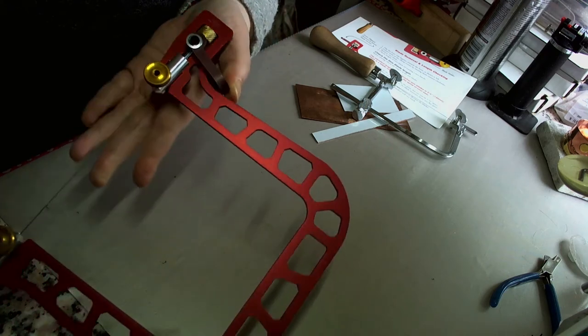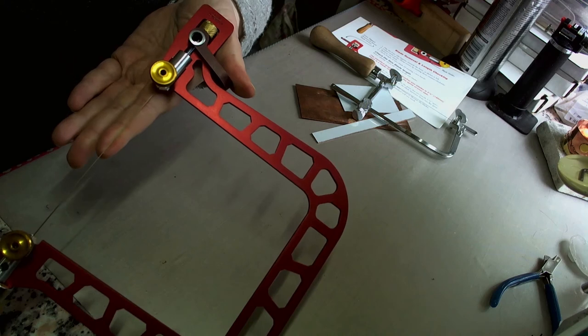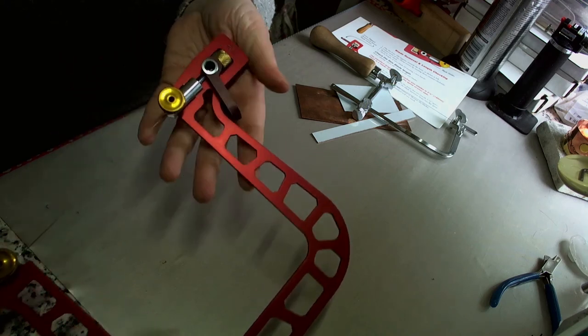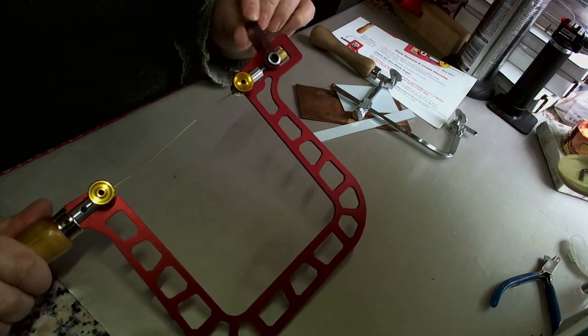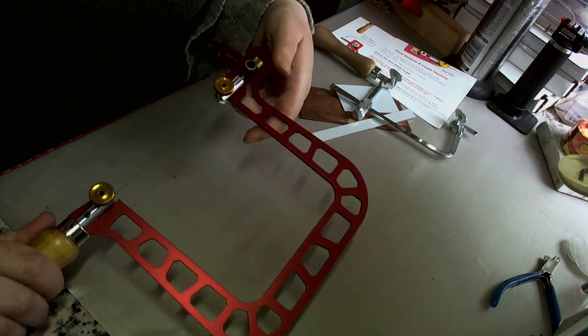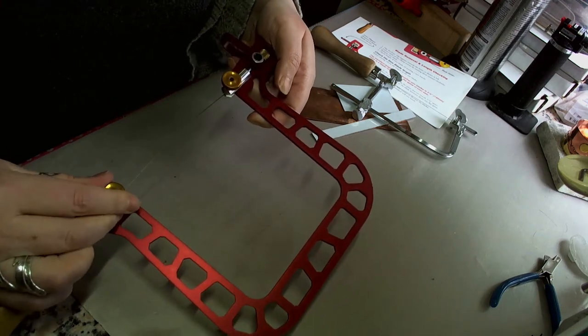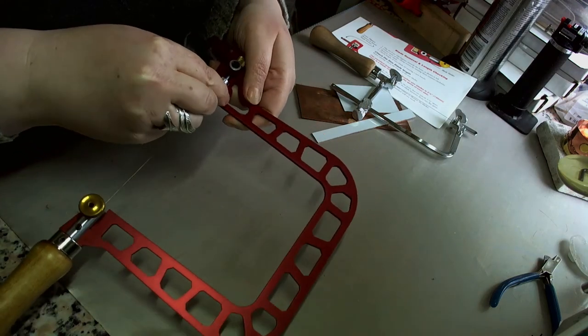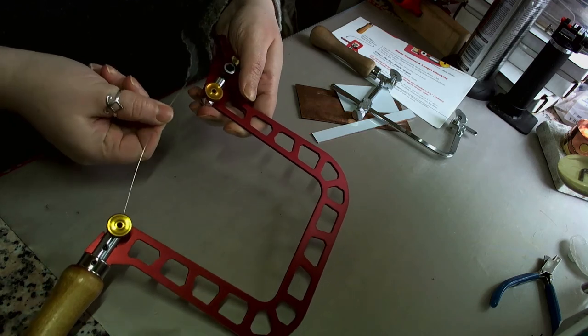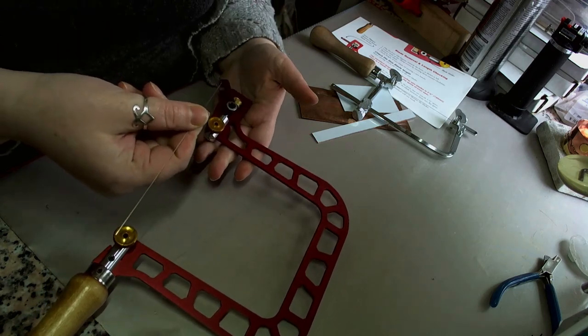The blade that comes included with it is not suitable for what I was doing, so I changed it out straight away. To change the blade is really simple: just slacken off your tension, unscrew here—you just need to twist it a tiny bit—unscrew here, and your blade will just come straight out.